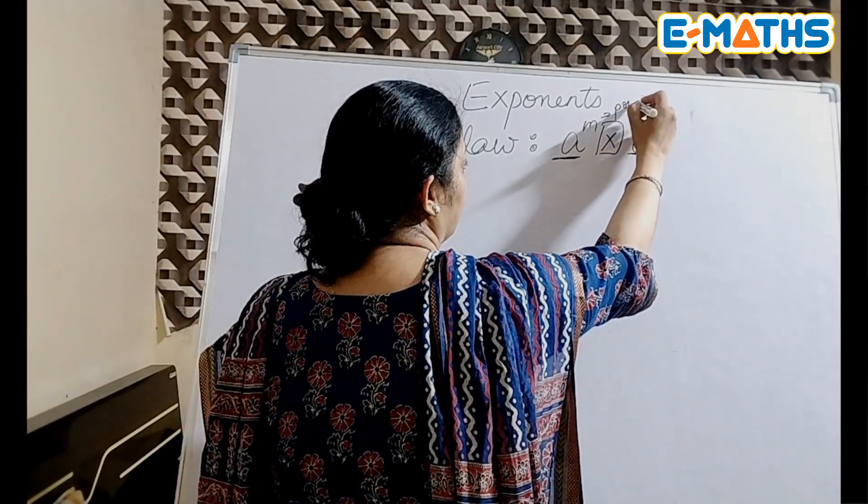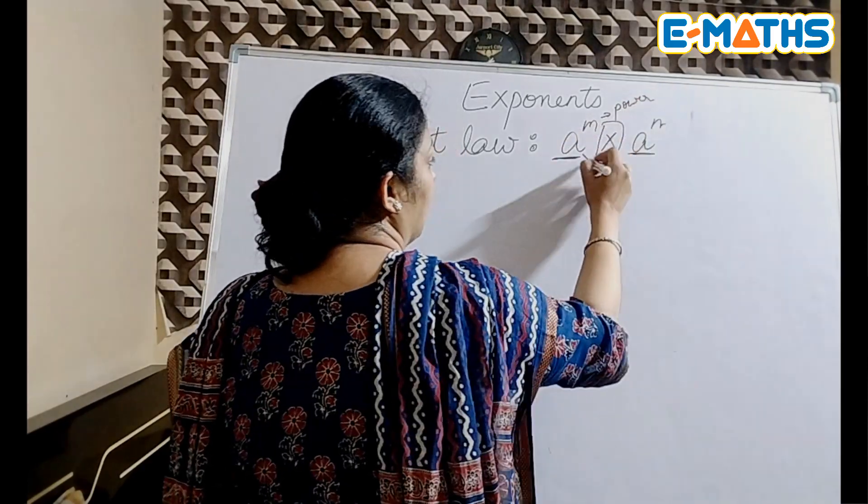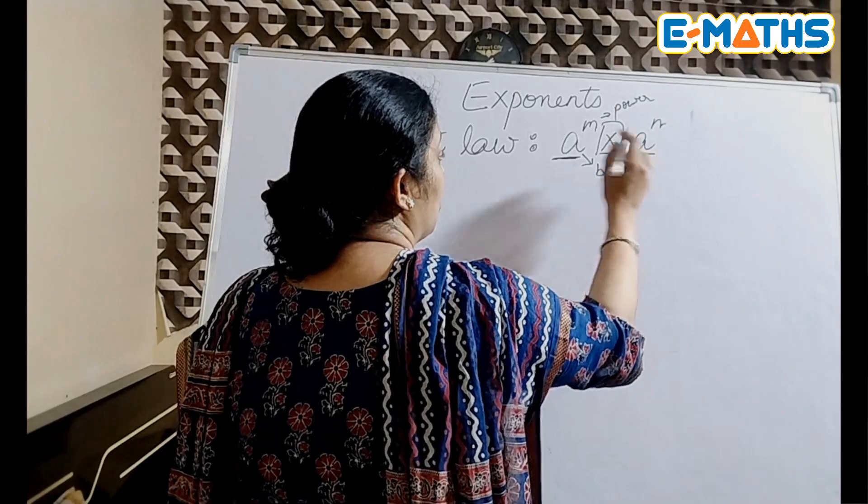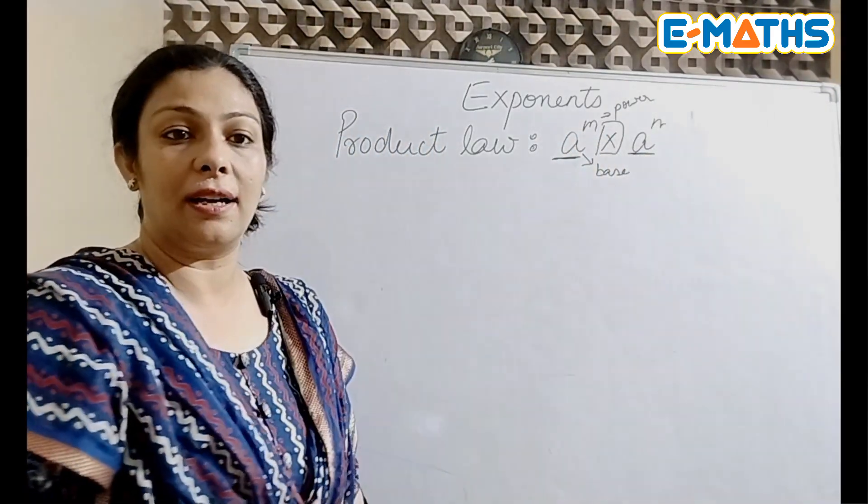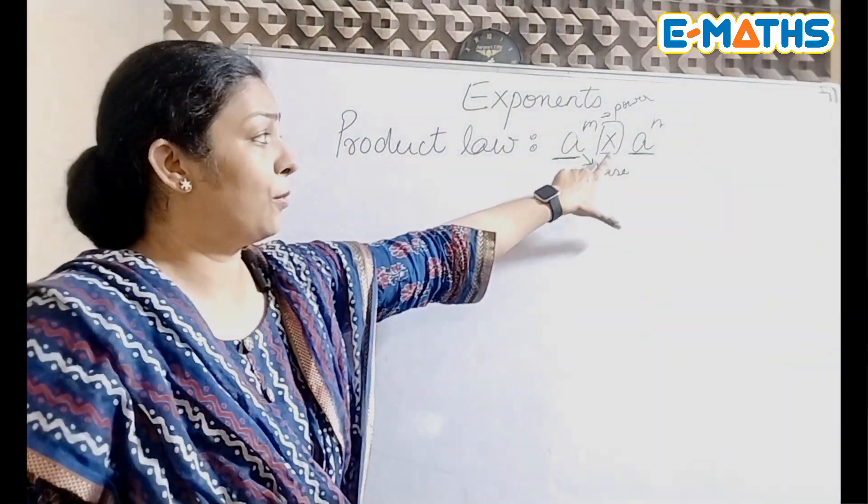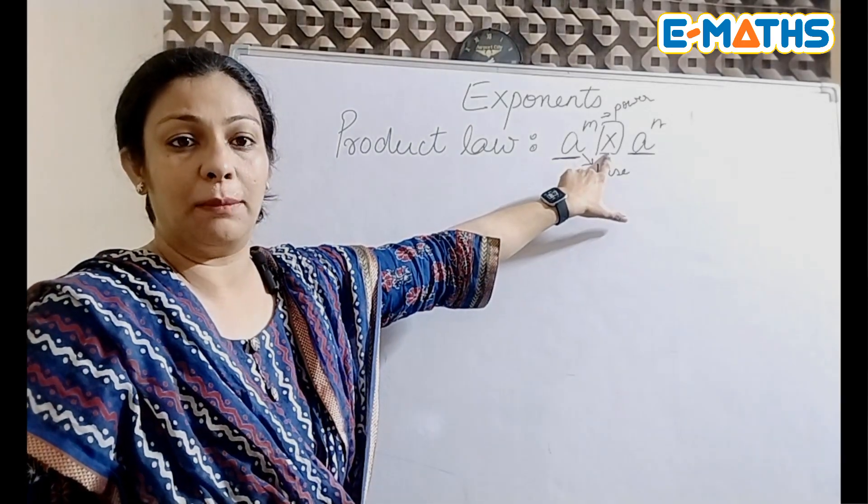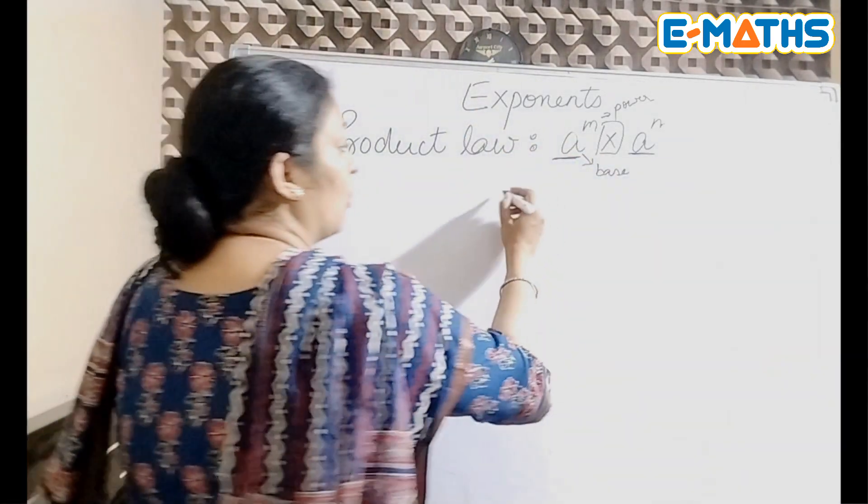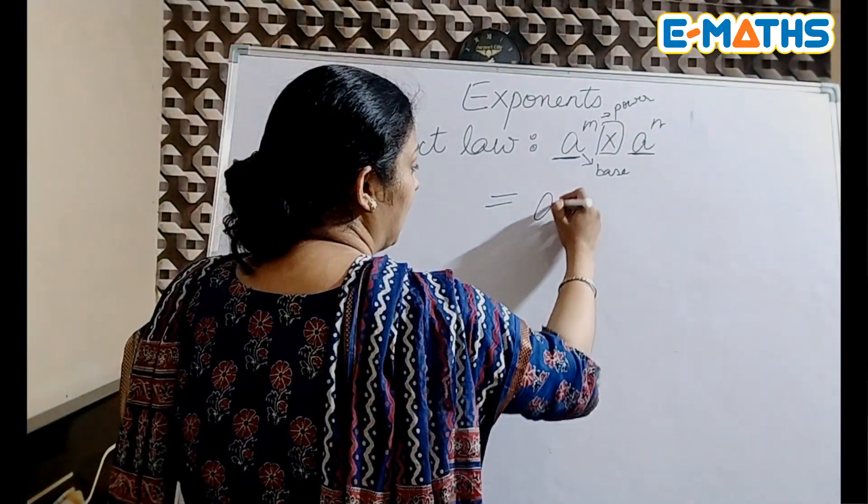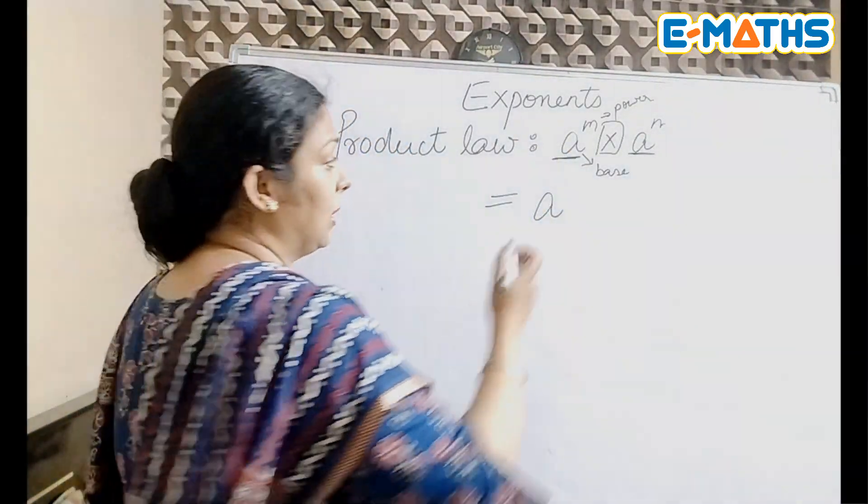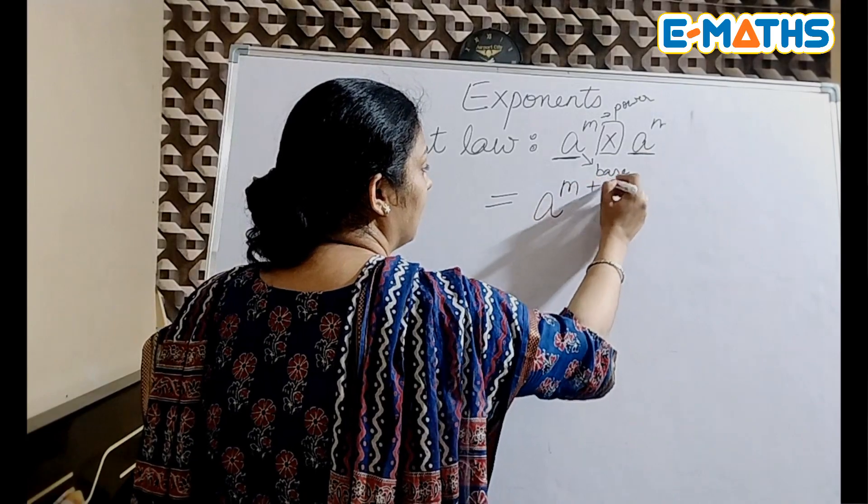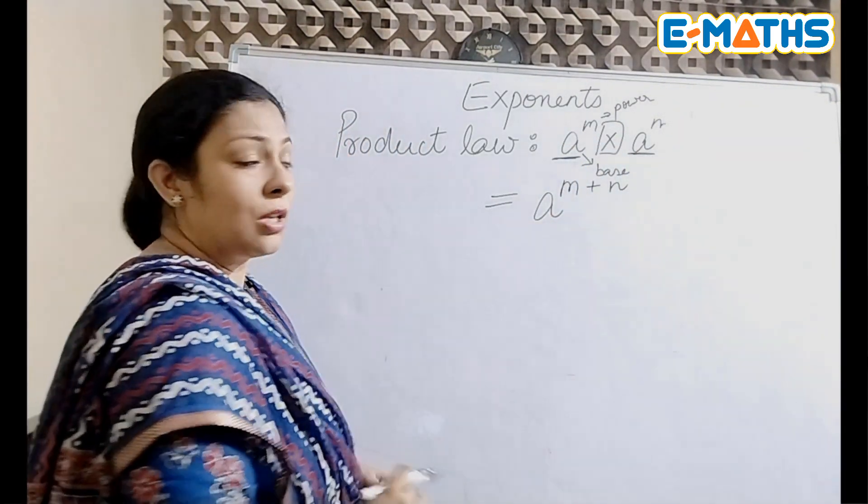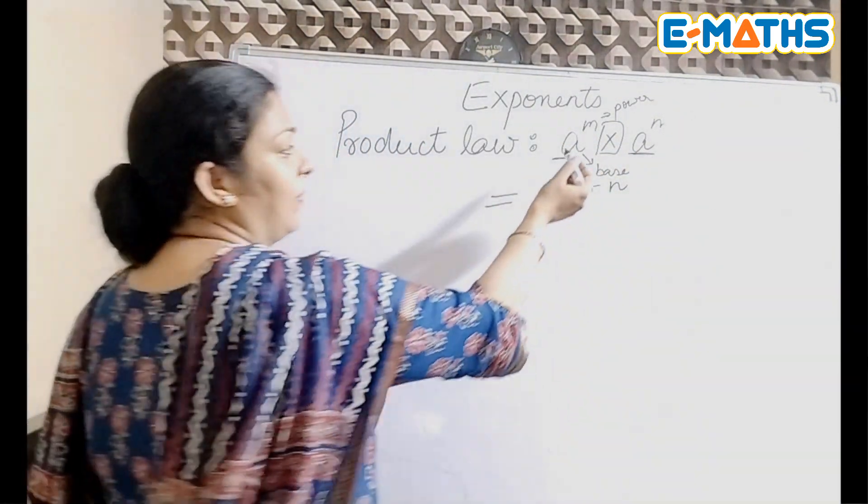When the bases are same and there is a product sign, multiplication sign, in between the two terms, it means you can apply this law in which you can keep the base common and add up the powers.